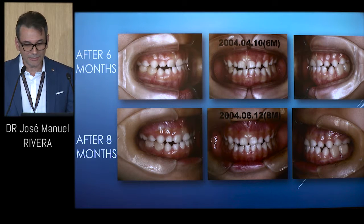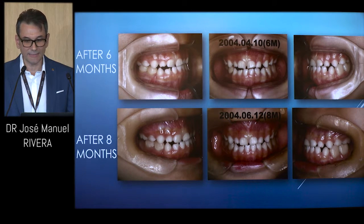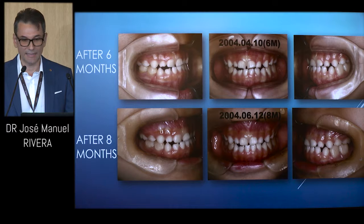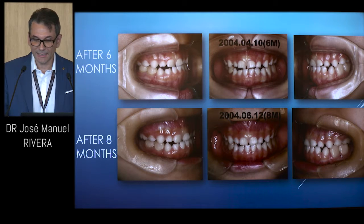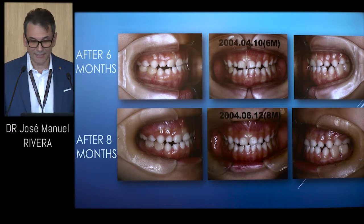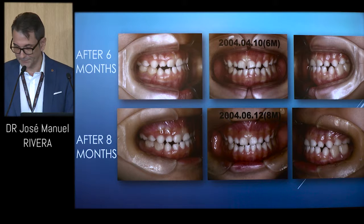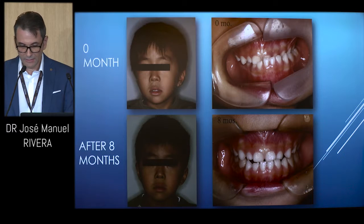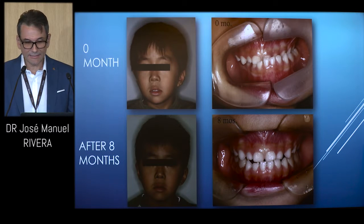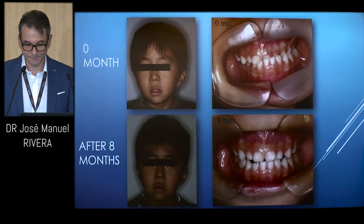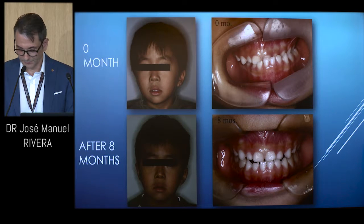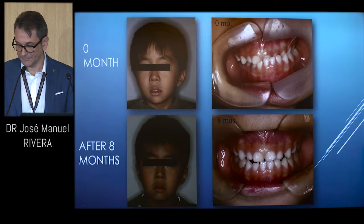As you wait until you see the bite improving and the patient's D's and E's eventually exfoliate, you see the permanent central incisors erupt with a positive overjet. This is at the start of treatment and after eight months — a very simple appliance.